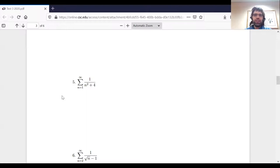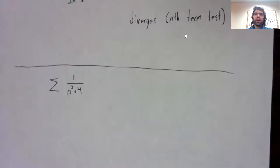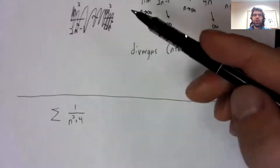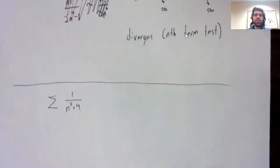Now five really does look like the limit comparison test to me. There are other ways you could approach five. You could integrate this thing, so you could try the integral test. The argument I'm going to make though is the same argument I started to make up here.